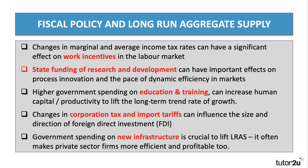First, some economists think that work incentives are impacted a lot by the tax system. If the government changes marginal and average income tax rates, that might affect people's incentive to work. Free market economists believe that cutting income tax is a way of stimulating work effort, work hours, and labour supply. The bigger the labour supply in the economy, the greater the long-run aggregate supply.